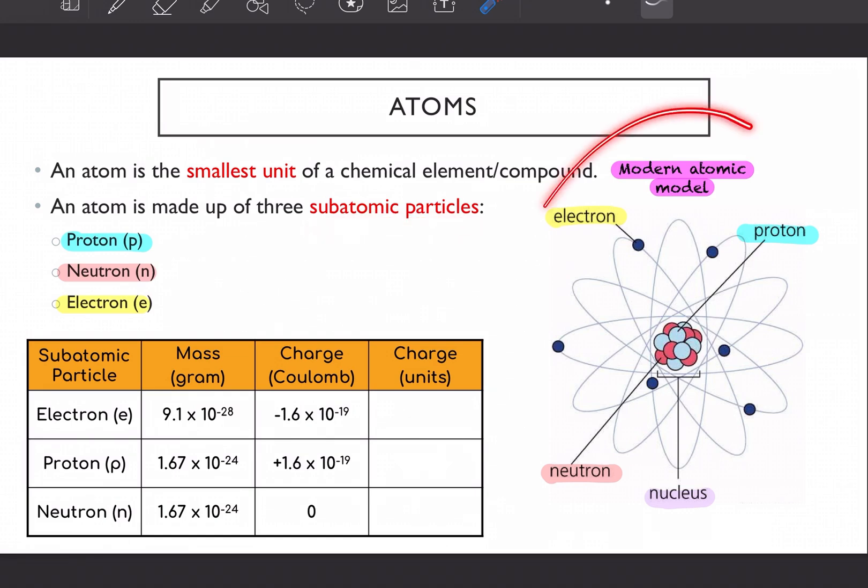So if you look here on your right, you can see how the modern atomic model looks like. We have our proton, this blue thing here. It has a plus charge or positive charge. And then we have our neutron, this red one. And then we also have our electron.